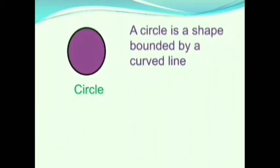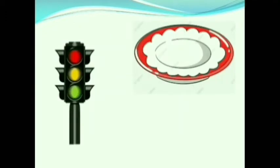A circle is a shape bounded by a curved line. Observe these examples, children. When we walk on the road, you will see traffic lights — the lights in the traffic signal are also in circular shape. See this plate — it is in circular shape. The bottle cap will also look like a circle.